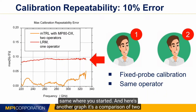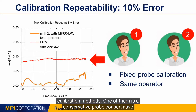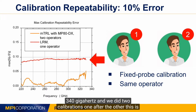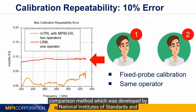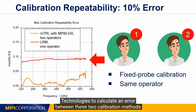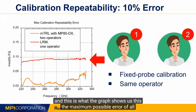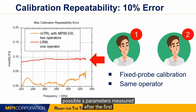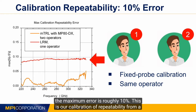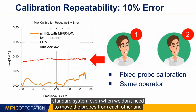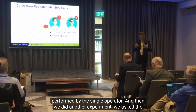Here's a comparison of two calibration methods. We took an LRAM standard at frequencies from 220 to 340 gigahertz and performed two calibrations one after another to assess reproducibility. Using the calibration comparison method developed by the National Institute of Standards and Technology, we calculated the error between the two calibrations. The graph shows the maximum possible error across all four S-parameters after the first calibration versus the second. The maximum error is roughly 10% — that is our calibration repeatability on a standard system, performed by a single operator.